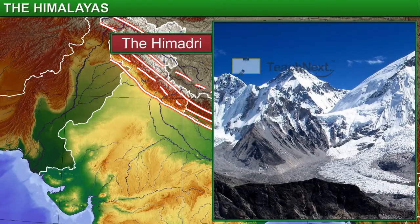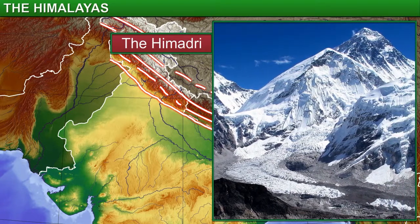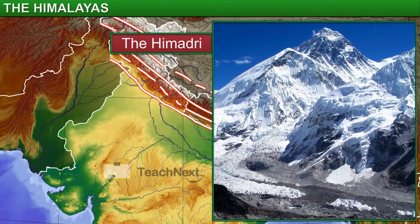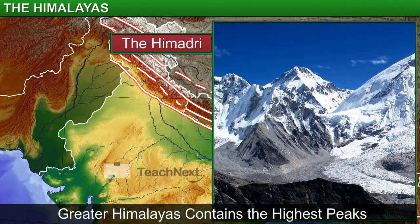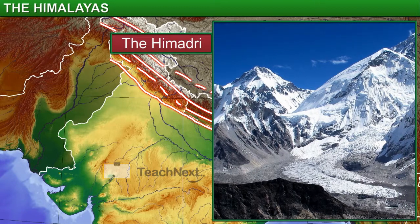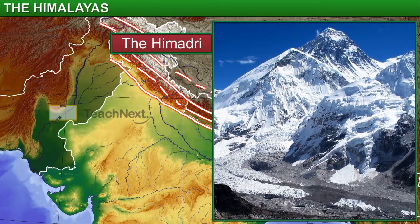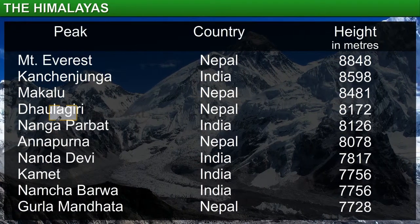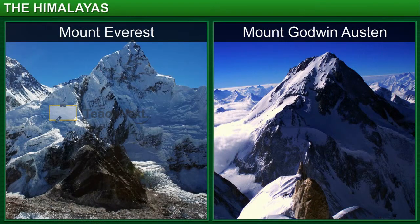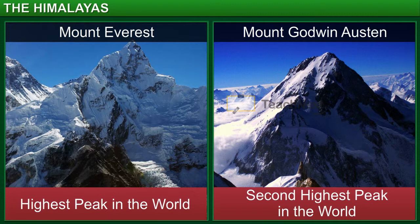The Himadri, also called the Great or Inner Himalayas, is the northernmost range of the Himalayas. This range is in a single, unbroken line and has the highest peaks. Considering that the average height of peaks in the Himadri is 6,000 meters, it is not surprising that the important peaks of the Himalayas are located in this range. For example, Mount Everest, the highest peak in the world, and Mount Godwin-Austin, the second highest peak in the world, are all part of this range.